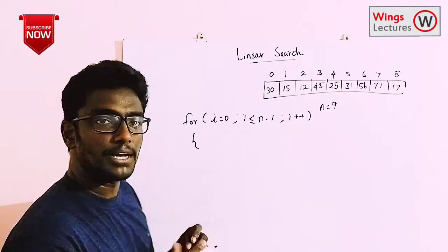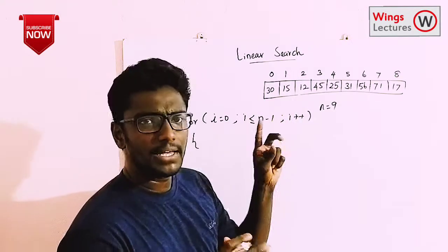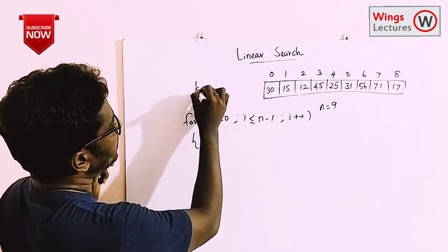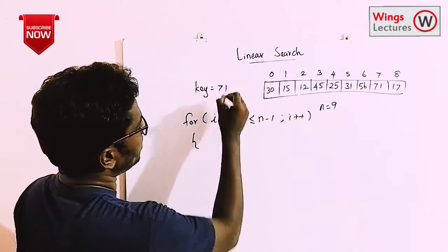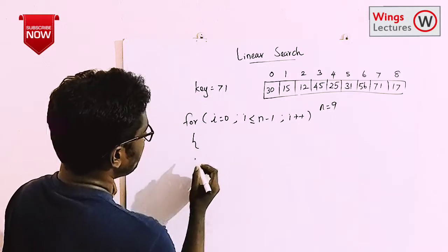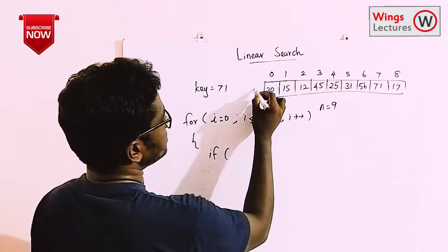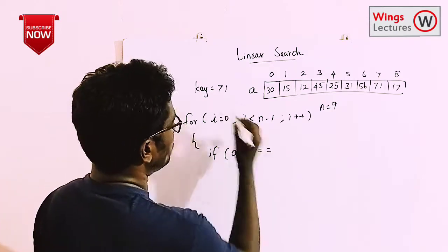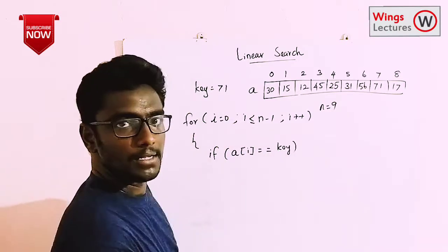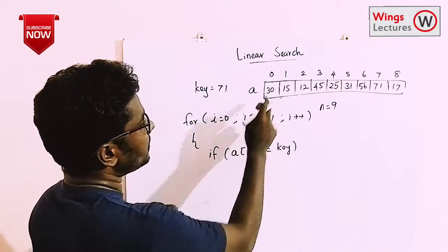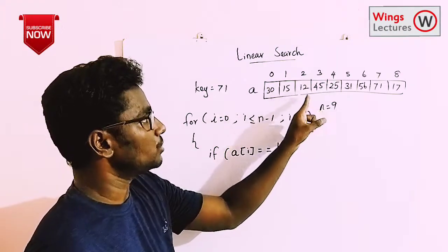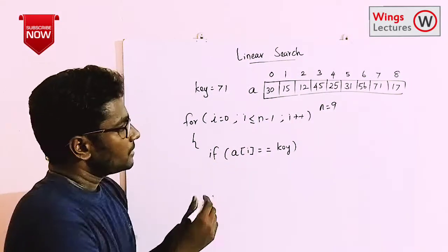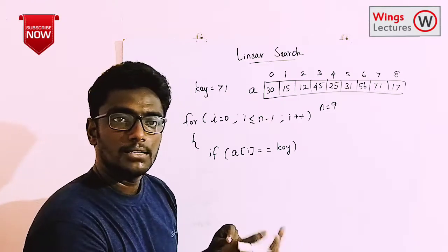I'm going to apply an if statement to compare the key element. So the comparison is: if array[i] == key. This is how the search will work — it will check first at the 0th position, then 1, 2, 3, going up to the last position.